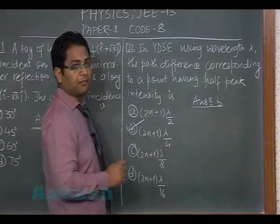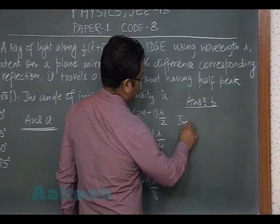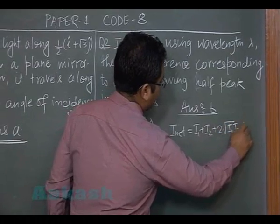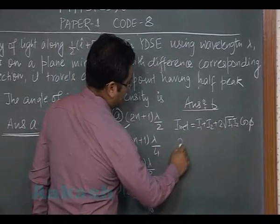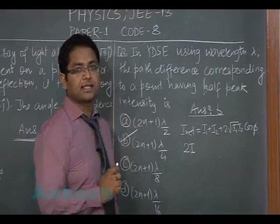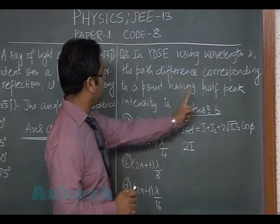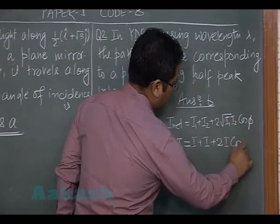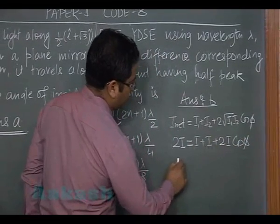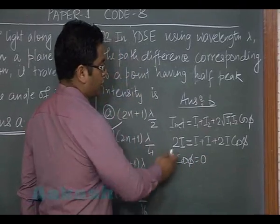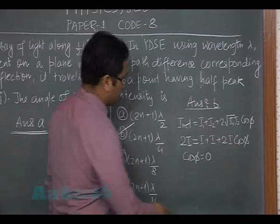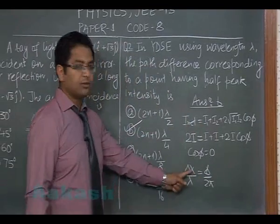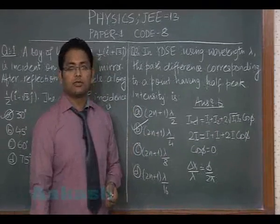For coherent sources, i_net = i1 + i2 + 2√(i1·i2)·cos φ. Since the peak intensity is 4i, half the peak intensity is 2i. So i_net = 2i gives us i + i + 2i·cos φ = 2i, which leads to cos φ = 0. Using the conversion δx/λ = φ/2π, this leads to option B.